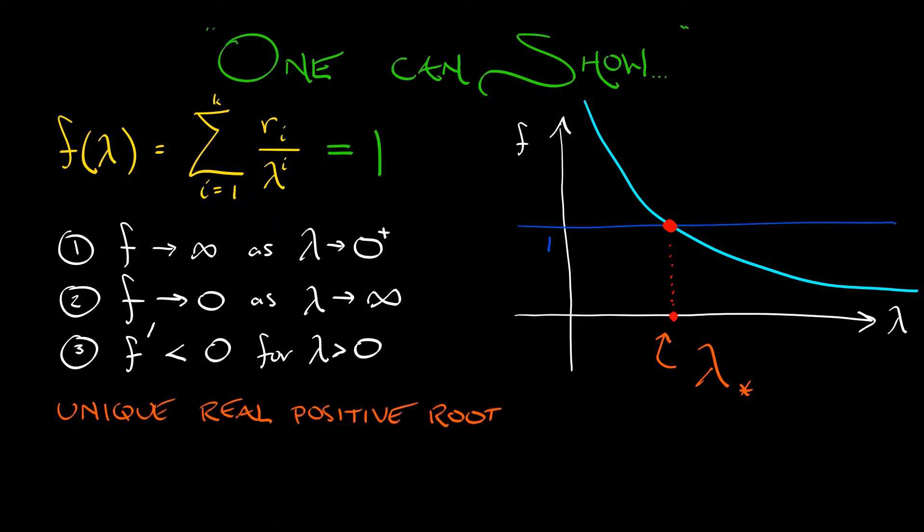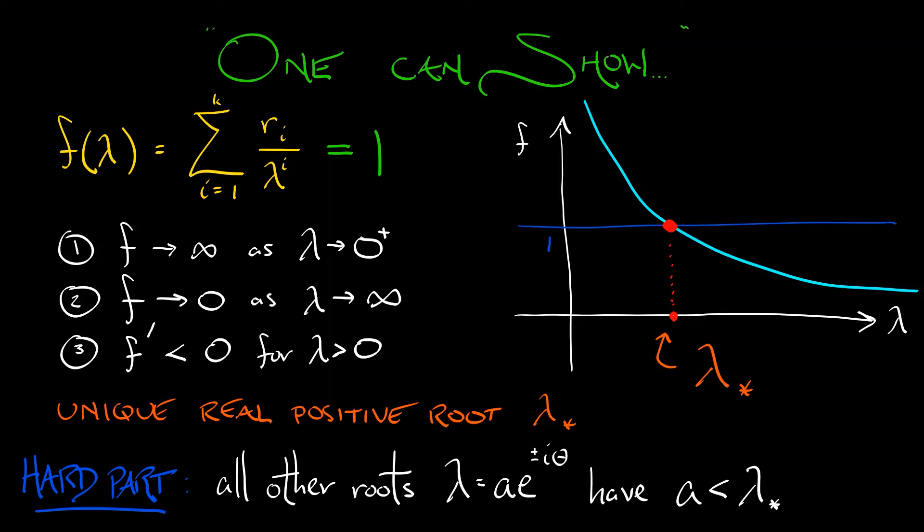Now, the hard part is to show that all the other solutions to the characteristic polynomial, all the other roots lambda, which have to be of the form some constant a times e to the plus or minus i theta, are going to be complex roots or maybe negative real roots. But if we represent them in this form, then we have to have this modulus a being strictly less than this positive real root lambda star. Now, I'm not going to show this. Can you show this? Yes, you can. Again, what you're going to have to do is expand out these complex roots in terms of their real and imaginary parts using the Euler formula. From that Euler formula, you're going to see that all of the real components have to cancel out. You're going to use the fact that this cosine of theta is always going to be strictly less than one. And then you're going to do some work. Have fun.